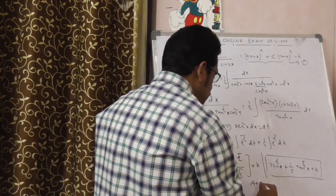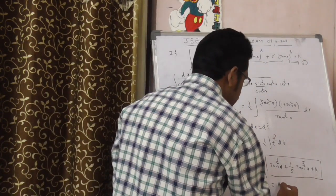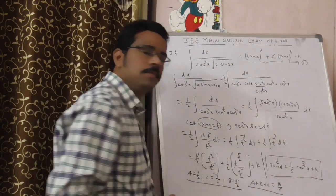What is the final value? That is A plus B plus C. If you add these 3 values, you get answer as 16 by 5.